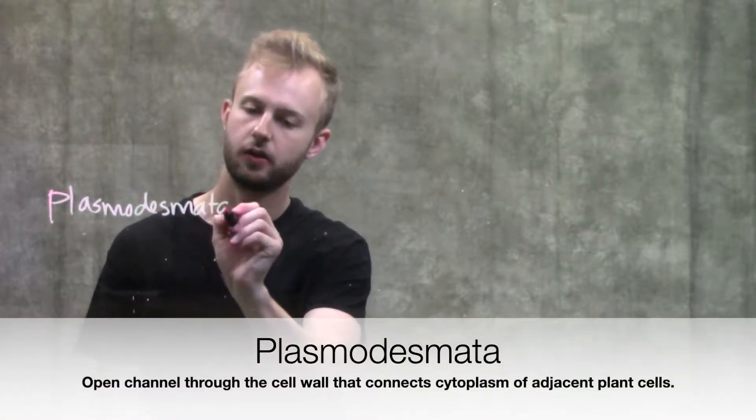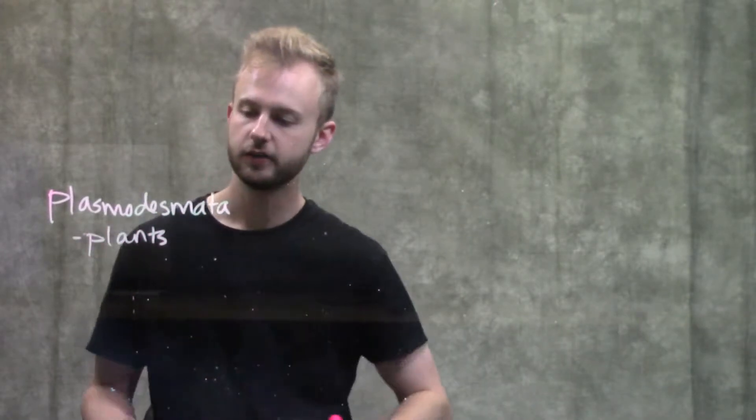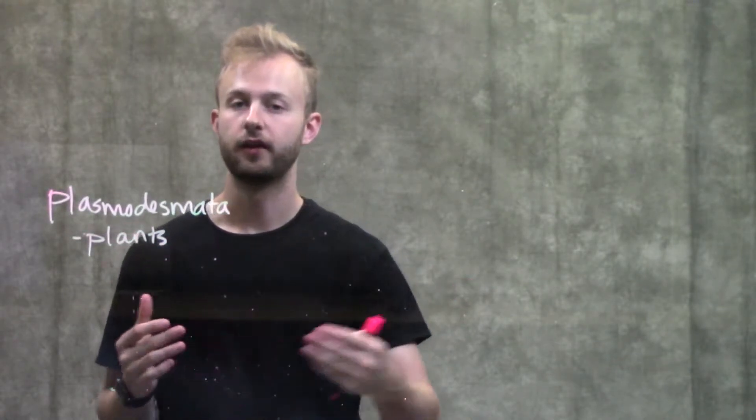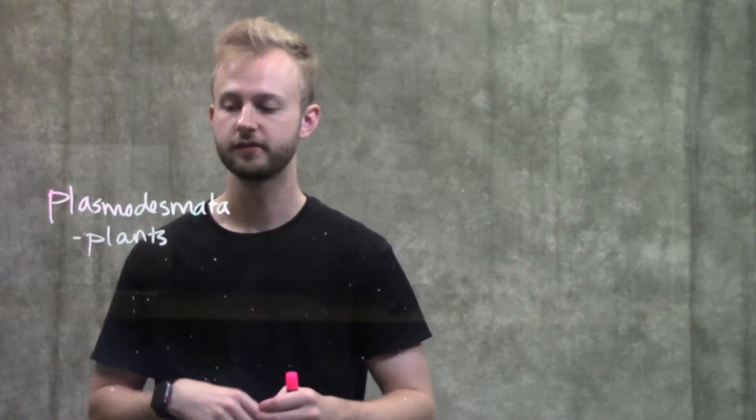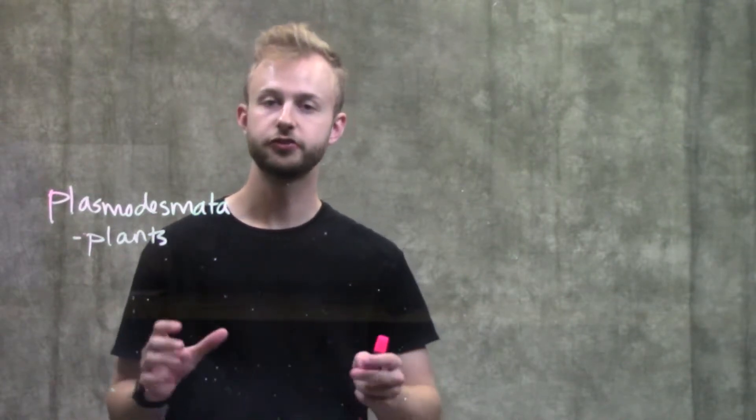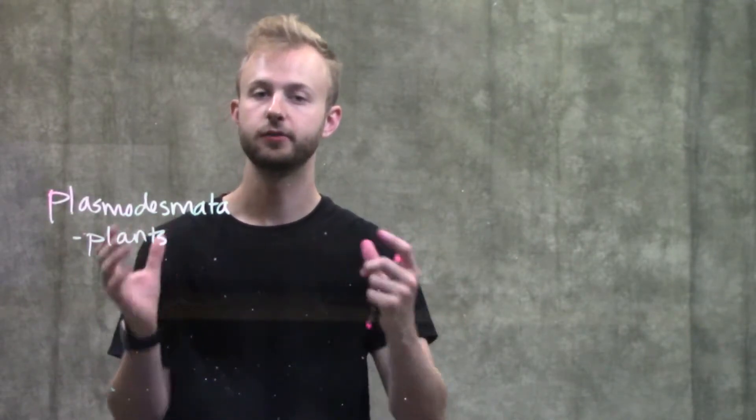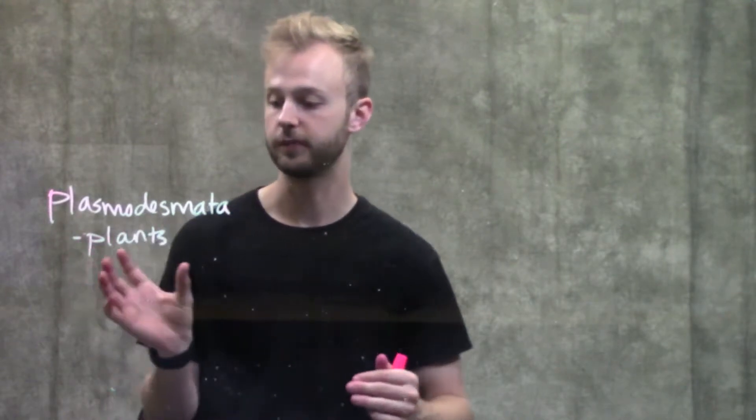Plasmodesmata are only found in plants and they connect the cytoplasms of two neighboring cells. This allows materials and cytoplasm to flow between these two compartments. Plasmodesmata essentially connect all of the cells within a plant to make it one whole continuous system, so you have things moving in and out of these cells through these plasmodesmata.